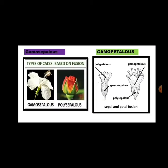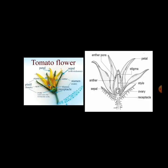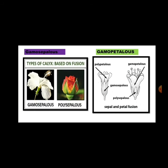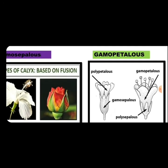Then gamopetalous and polypetalous. Gamopetalous means jo petals hote hain, pankhuriyan, woh ek dusre se joined hona. Polypetalous means ek dusre se separate hona, jointed nahi hona. With the help of this diagram you can understand — jo petals jo hain woh ek dusre se stick nahi hote hain, separate hain. That means polypetalous.